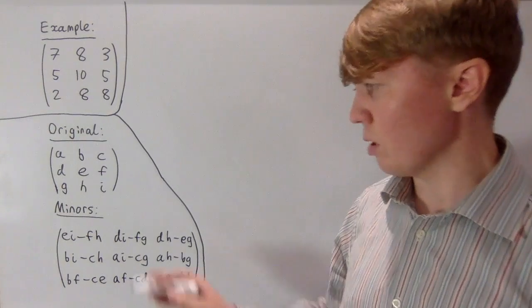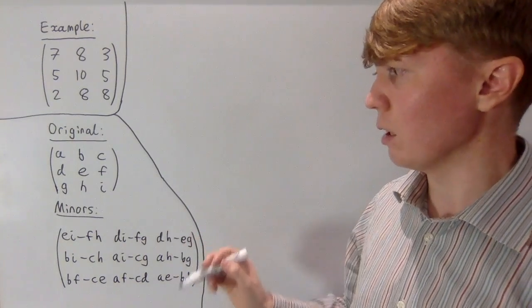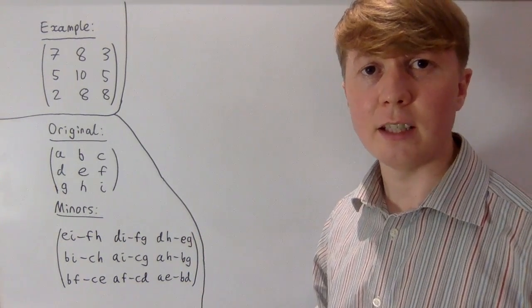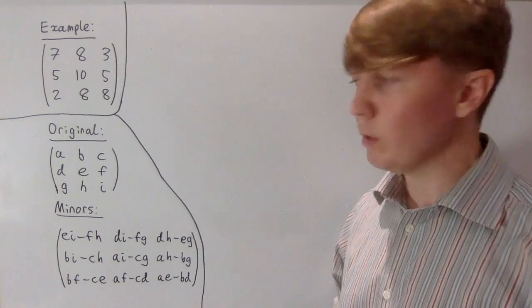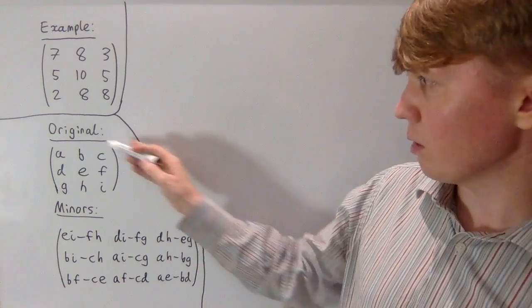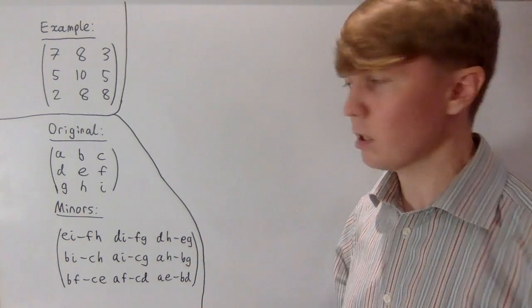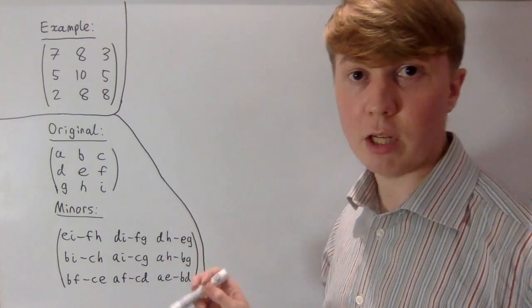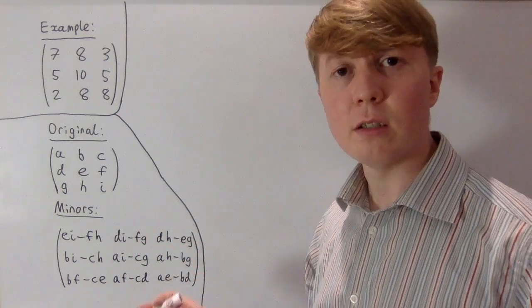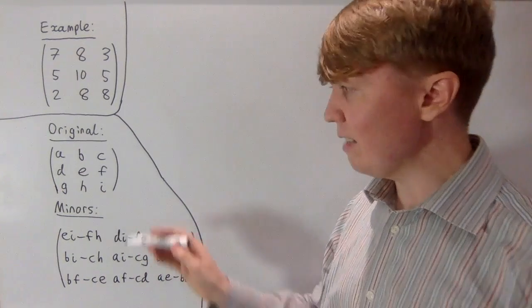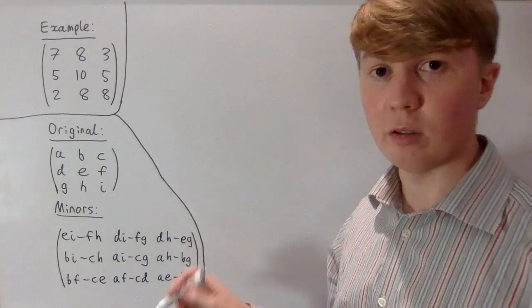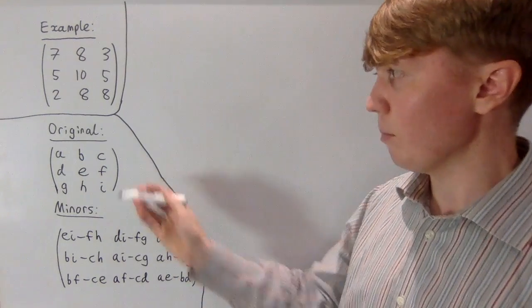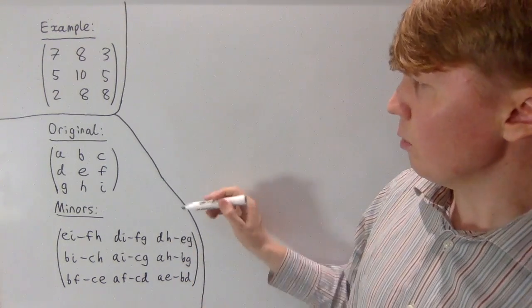If you think about when we use the matrix of minors, it's really useful in a method for calculating the inverse of a matrix. So let's imagine we started trying to find the inverse of our original matrix: find the matrix of minors, introduce some negative signs, transpose, and so on — then you could find the inverse of the original matrix. This could be useful because we could then invert that to get back to our original.